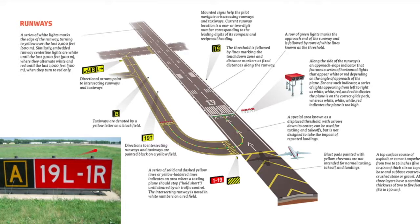A taxiway can also intersect with a runway. Here, the letter A — Alpha — in a yellow box is a taxiway location sign, just like Delta. But to the right, when you have white letters on a red background, that is a mandatory hold position sign for a taxiway-runway intersection. That tells pilots it is an entrance to a runway from a taxiway. No matter the circumstances — whether cleared by ATC or not — pilots must stop before entering the runway. In this sign, runway 19 left is to the left side and runway 1 right is to the right side.